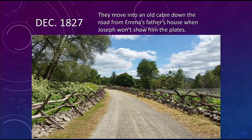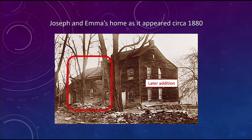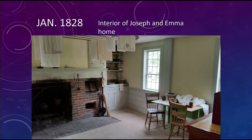Here's the road that goes from Emma's father's house down to the old cabin down the road. The cabin needed a lot of work but it was livable. In the late 1800s, the whole section on the right was a later addition — the one on the left was where Joseph and Emma lived. This is what it looks like today, all restored. This is where all of the abridged plates were translated in this little house.